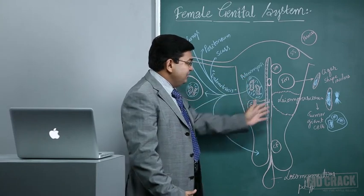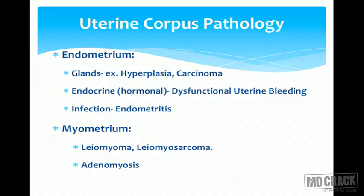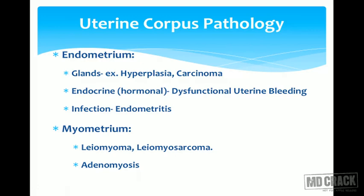Let us look at the endometrial pathological lesions. In the endometrium we will see hyperplasia of the glands — endometrial hyperplasia — with types including simple and complex hyperplasia. We also cover endometrial carcinomas, dysfunctional uterine bleeding (DUB), inflammatory conditions like tubercular endometritis as an important cause of infertility, and myometrial lesions like leiomyomas, leiomyosarcomas, adenomyosis, and endometriosis.